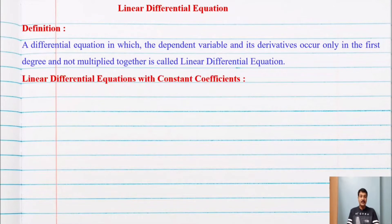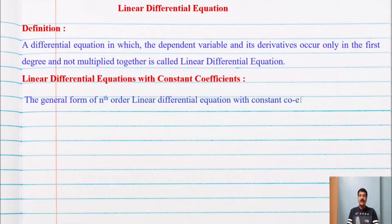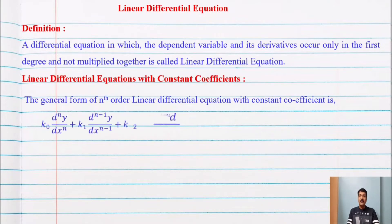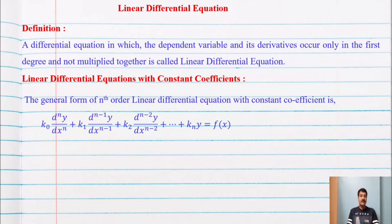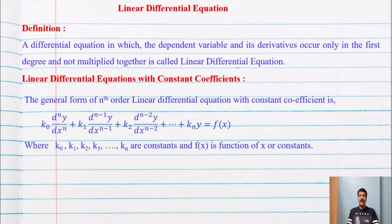In this unit we are going to study the linear differential equation with constant coefficient. The general form of the nth order linear differential equation with constant coefficient is: k0 times the nth derivative of y with respect to x, plus k1 times the (n-1)th derivative, plus k2 times the (n-2)th derivative, plus dot dot dot, plus kn times y, equal to f of x, where k0, k1, k2, k3, dot dot dot, kn are constants.